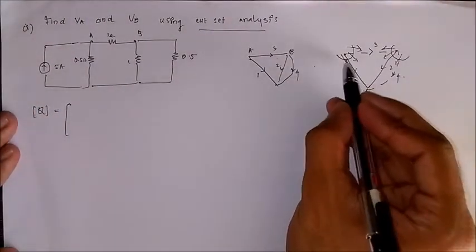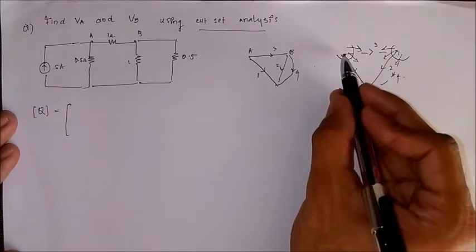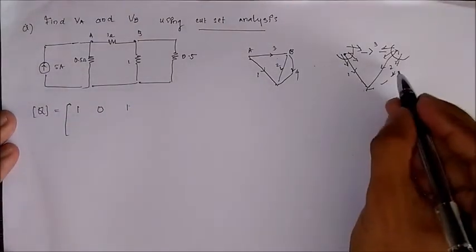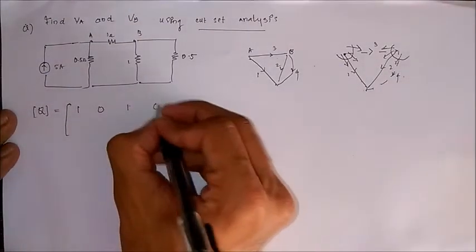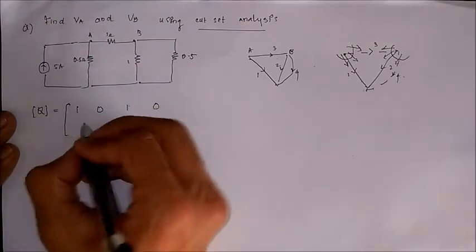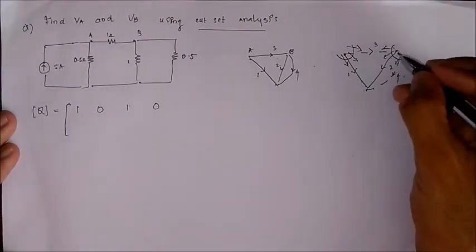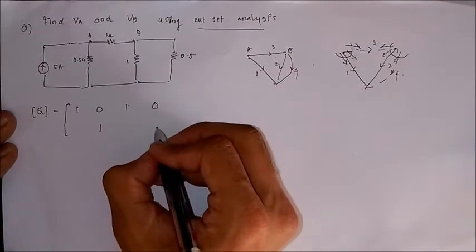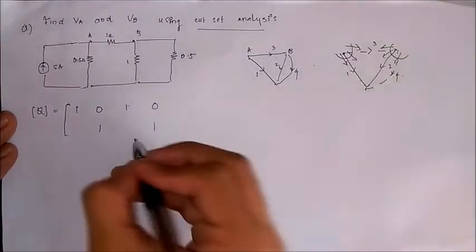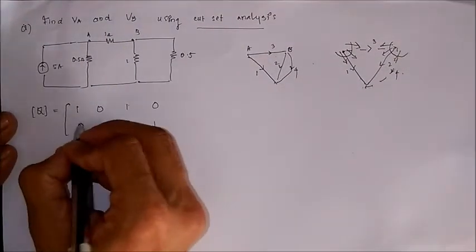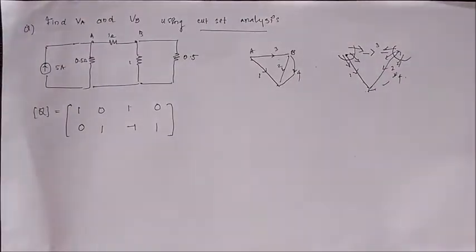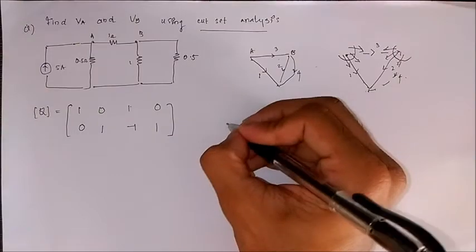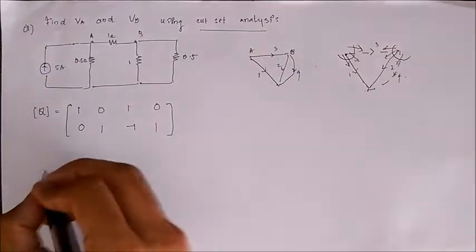To obtain the cut set matrix Q, we first consider the twig 1. 1 and 3 are also in that direction therefore 1 0 1 and 2 and 4 are not incident therefore zero. Similarly for 2, 2 and 4 are in the same direction and 3 is opposite to the cut that is minus 1 and 1 is not incident that is 0. Similar to the nodal analysis, the equation using cut set matrix is Q times YB times Q transpose into Vt equals Q times YB times Vs minus Q into Is. This is almost same as our node analysis equation with the incidence matrix but the incidence matrix is replaced by the cut set matrix.